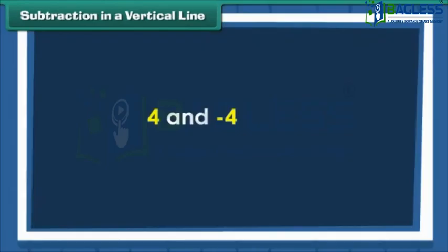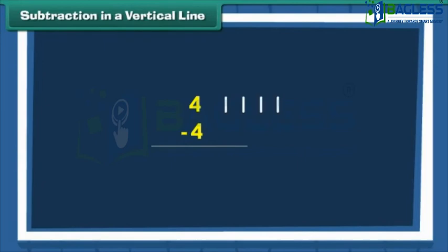Let us find four minus four. Draw four vertical lines next to four. Cross out all four vertical lines to subtract four. There are no vertical lines left. Therefore, four minus four is zero.